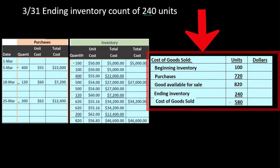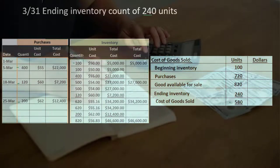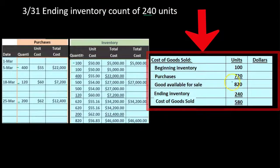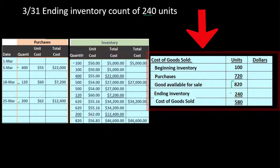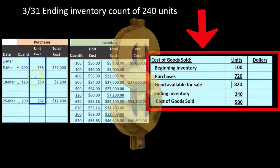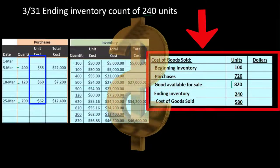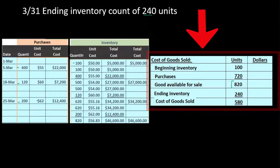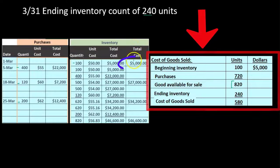Our assumption is that all 580 units not found in inventory were sold, treating any shrinkage as immaterial. We've allocated the 820 units between ending inventory (240) and cost of goods sold (580). Now we do the same allocation in dollars. We started with $5,000 in beginning inventory and purchased $41,600 worth (22,000 + 7,200 + 12,400), giving $46,600 goods available for sale — this is not an estimate, it's what we actually paid.